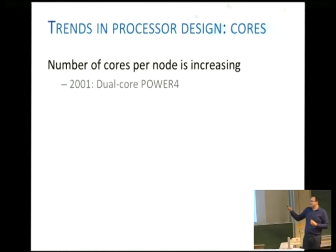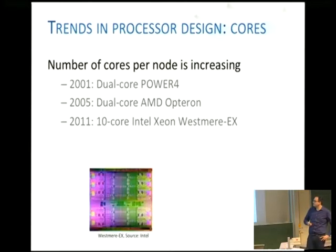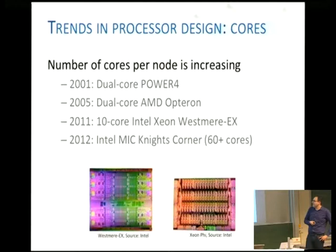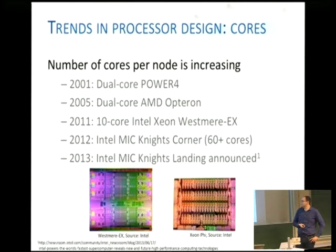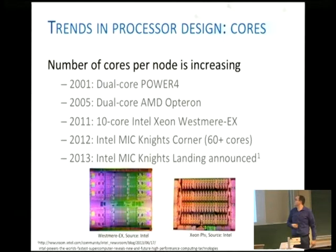Back in 2001 was the first dual-core processor with the Power4 from IBM, and the first x86 dual-core was in 2005 from AMD. Fast forward to 2011, we saw 10-core processors. Now we have 60-plus cores with Knight's Corner. Intel just recently announced the Knight's Landing processor, and my guess is that they'll believe and see more cores than what we saw in the first version of the Xeon Phi.